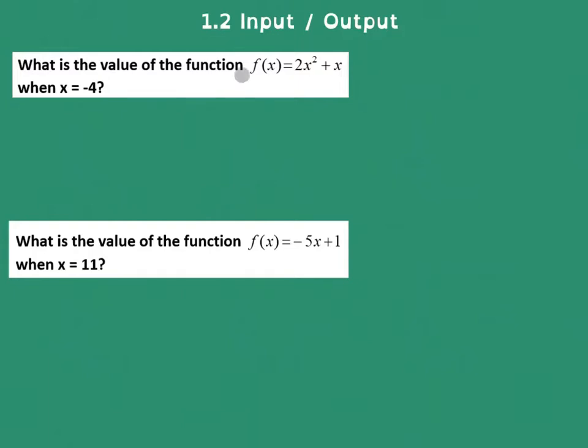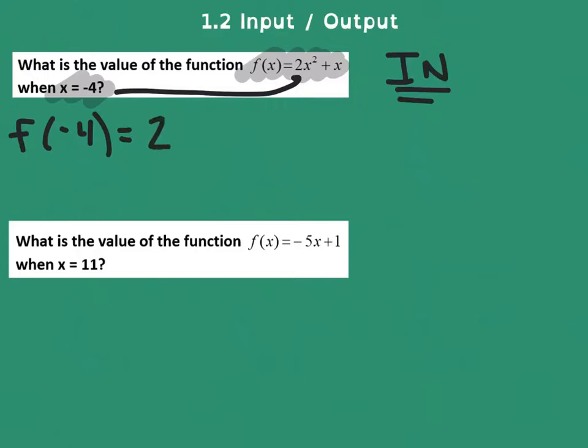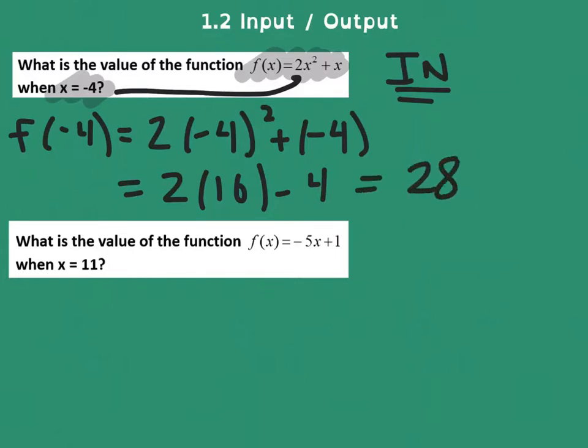First, I want you to notice the idea of what's happening here is they've given us a function and they've given us a value for x. This is certainly an input relationship because we're going to take this and drop it into here. So if we were trying to find the function at negative 4, it would be 2 times negative 4 squared plus a negative 4. This is 2 times 16 minus 4, and we get a final answer of 28 when we do that.